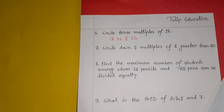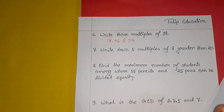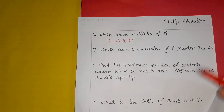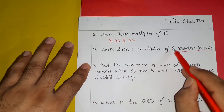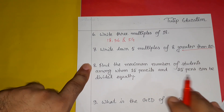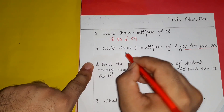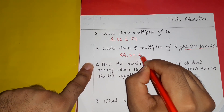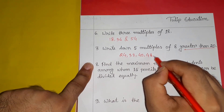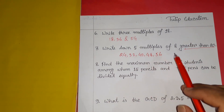Question number 7: write down 5 multiples of 8 greater than 20. The condition is greater than 20. The multiples of 8 are: 8, 16, 24, 32, 40, 48, 56... Since we need multiples greater than 20, we start from 24. So the 5 multiples of 8 greater than 20 are: 24, 32, 40, 48, and 56.